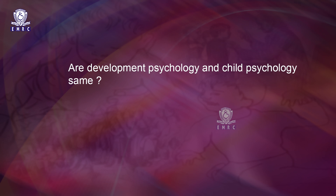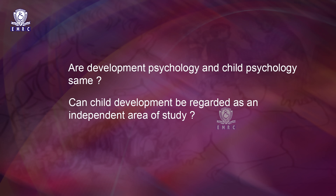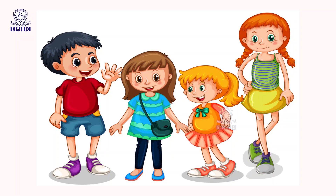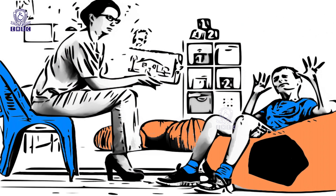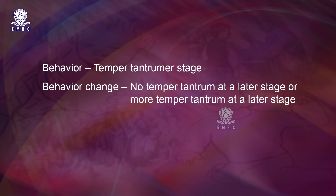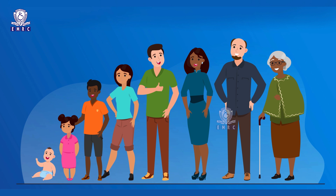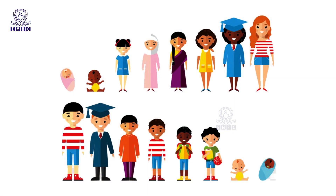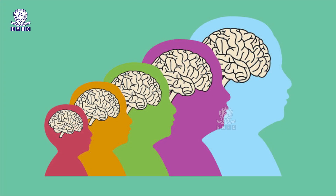Very often, two questions arise: are developmental psychology and child psychology the same? Can child development be regarded as an independent area of study? These terms are often used synonymously, but there is a difference. The term development means a progressive series that occurs as a result of maturation and experience. Developmental psychology is that branch of knowledge which studies behavior and behavior changes — for example, behavior is temper tantrum, and behavior change is no temper tantrum or more temper tantrum at a later stage — occurring during the entire life span, that is, from conception to death. Child development, on the other hand, deals with growth and development of characteristics up to the age of 14 years.